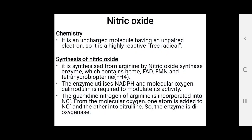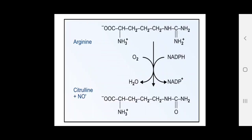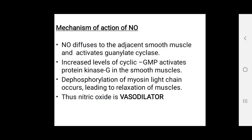Nitric oxide is a highly reactive free radical, an uncharged molecule having unpaired electrons. It is synthesized from arginine by nitric oxide synthase, which contains heme, FAD, FMN, and tetrahydrobiopterin. Nitric oxide diffuses to adjacent smooth muscles and activates guanylate cyclase. The increased level of cyclic GMP then activates protein kinase G in smooth muscles.